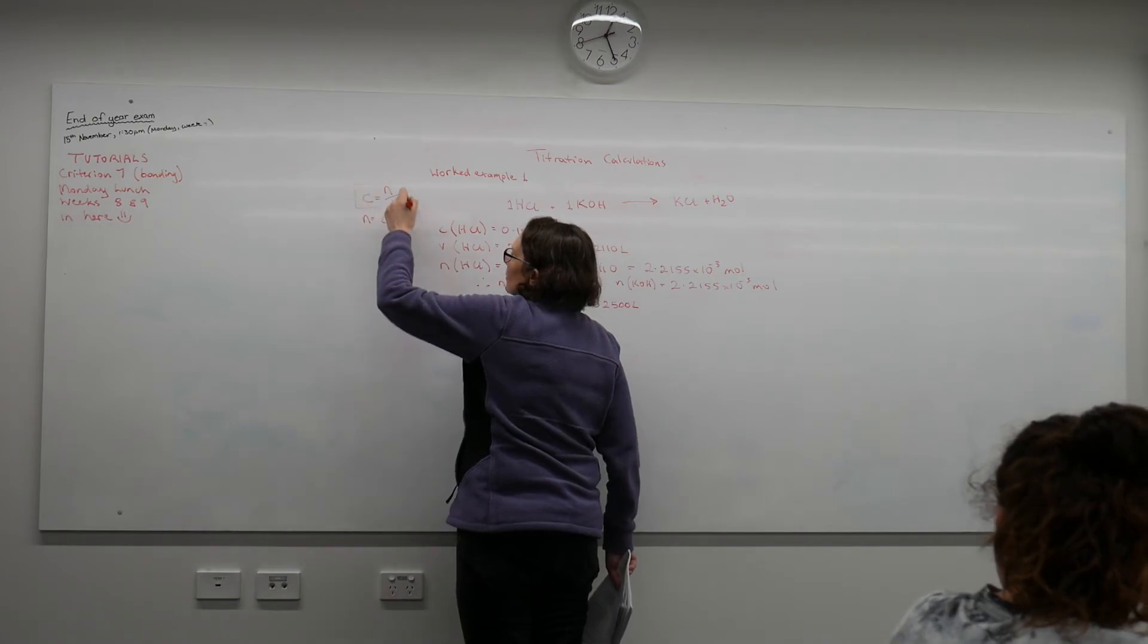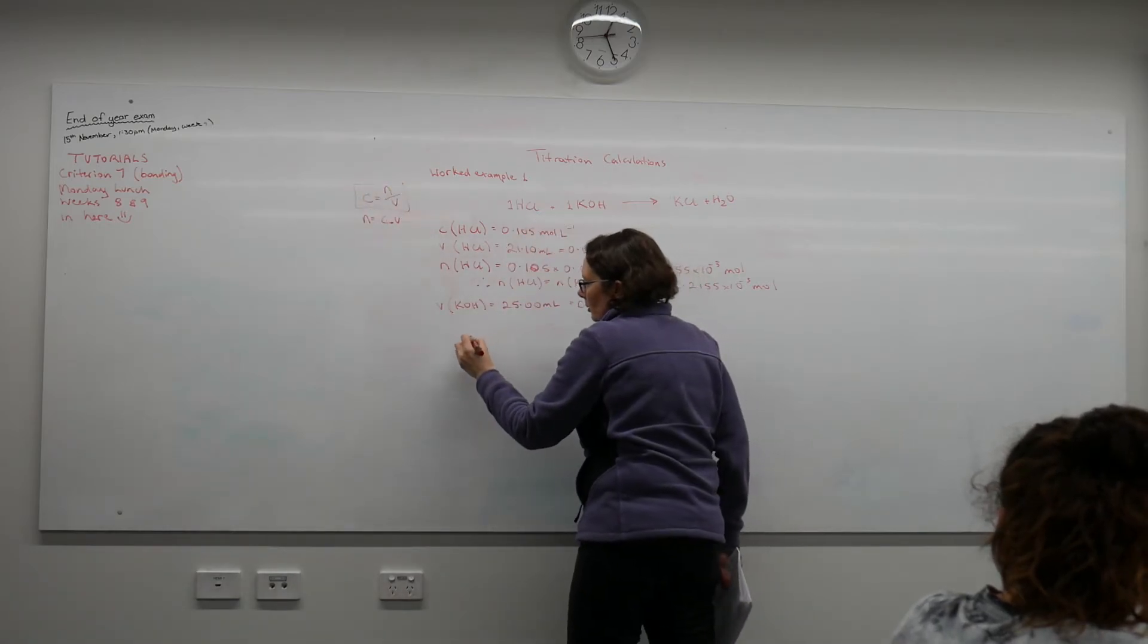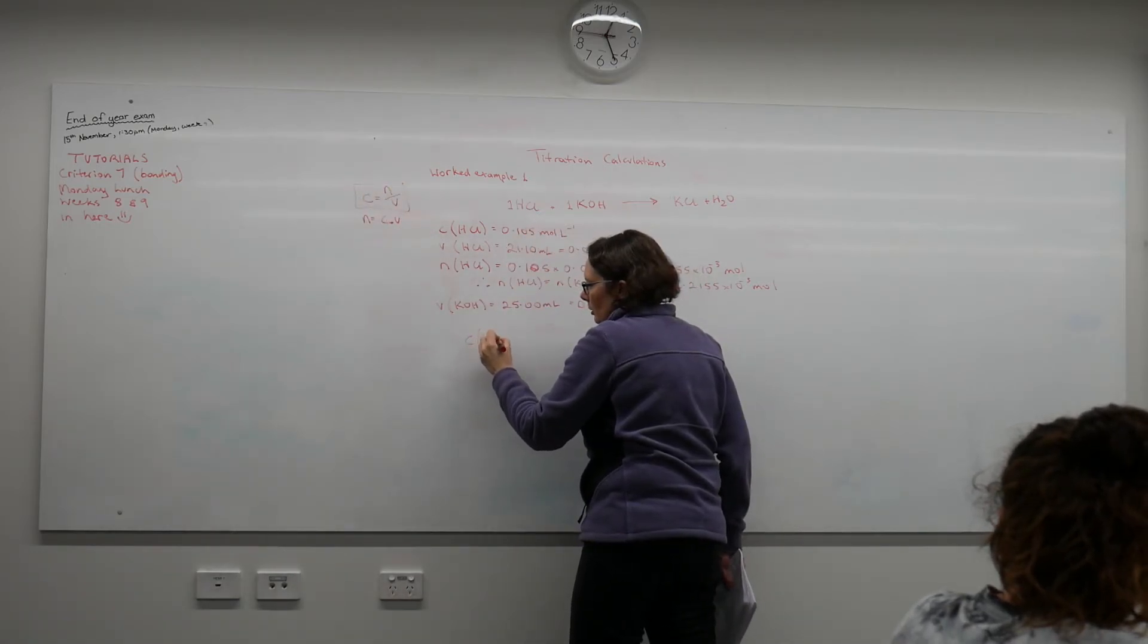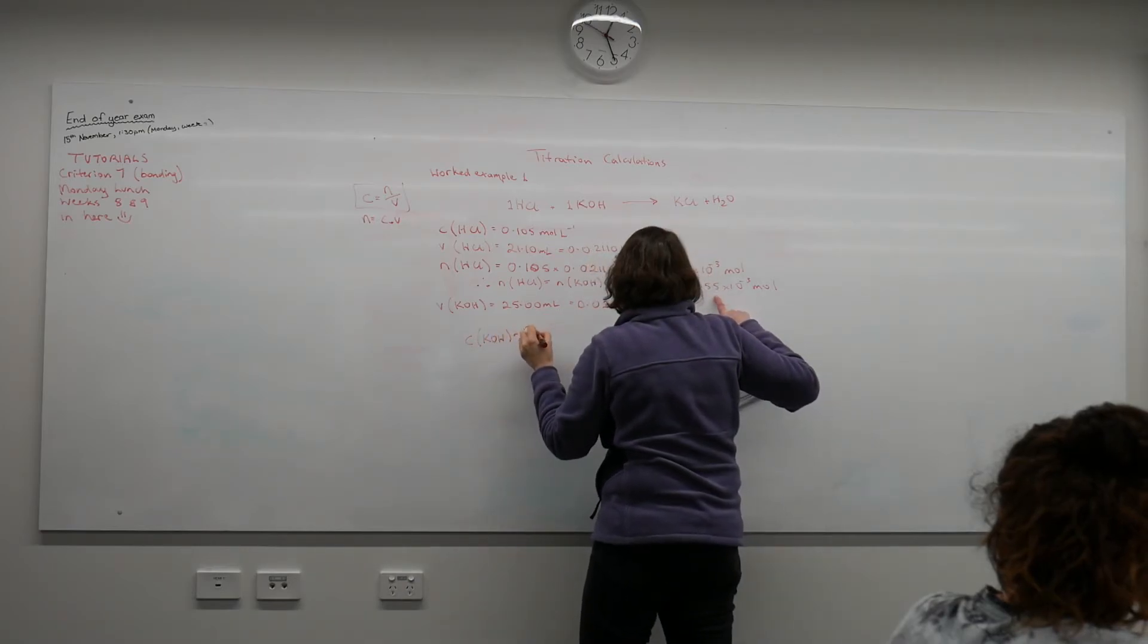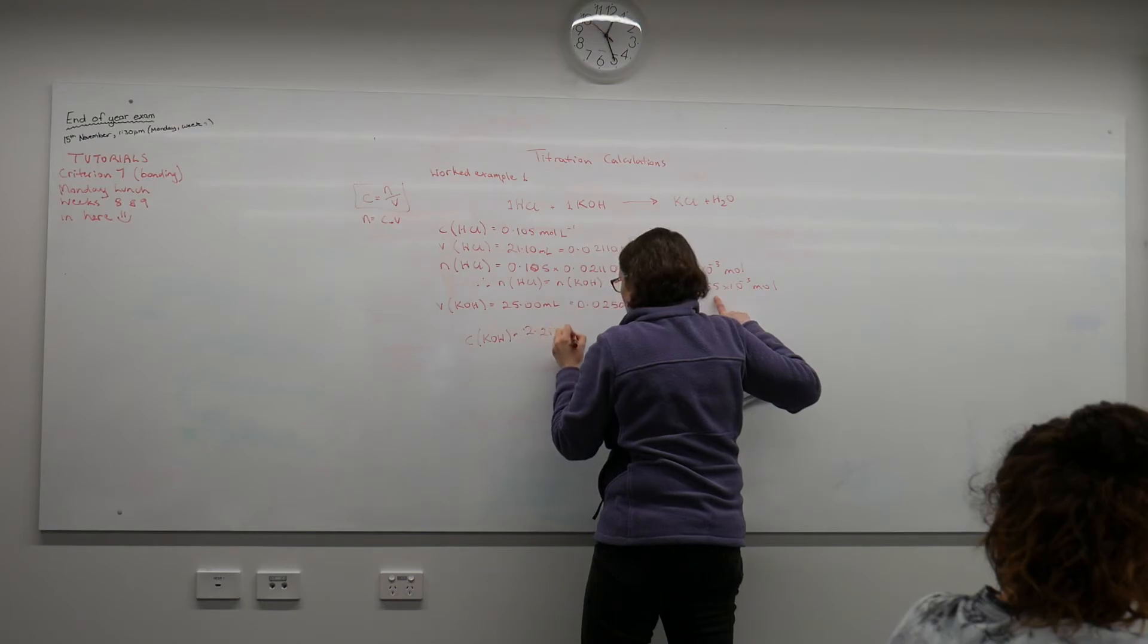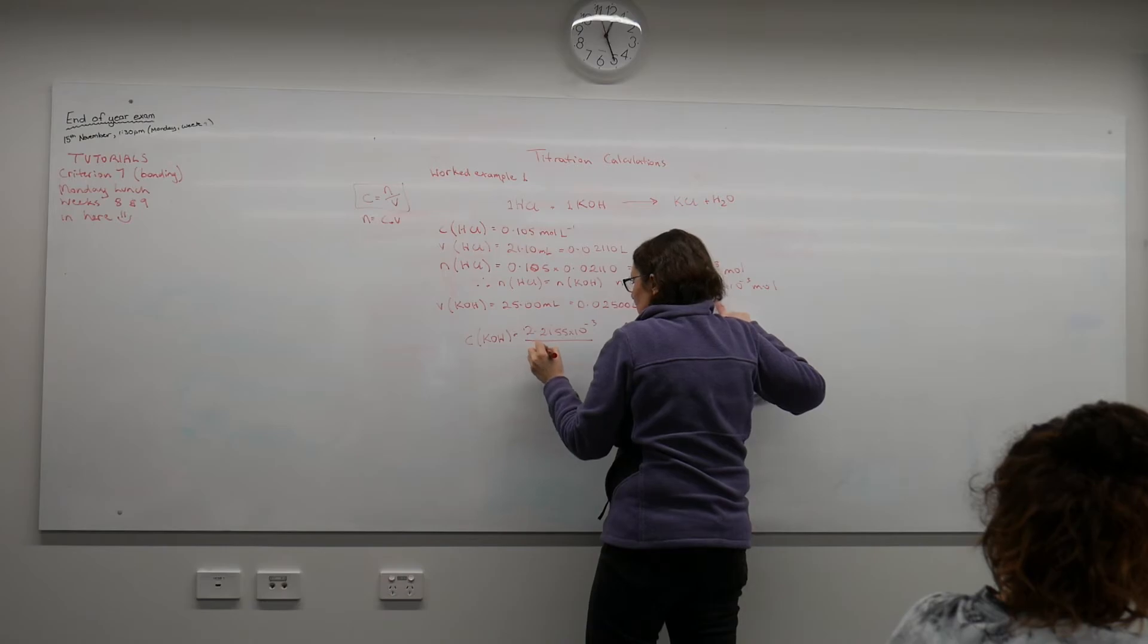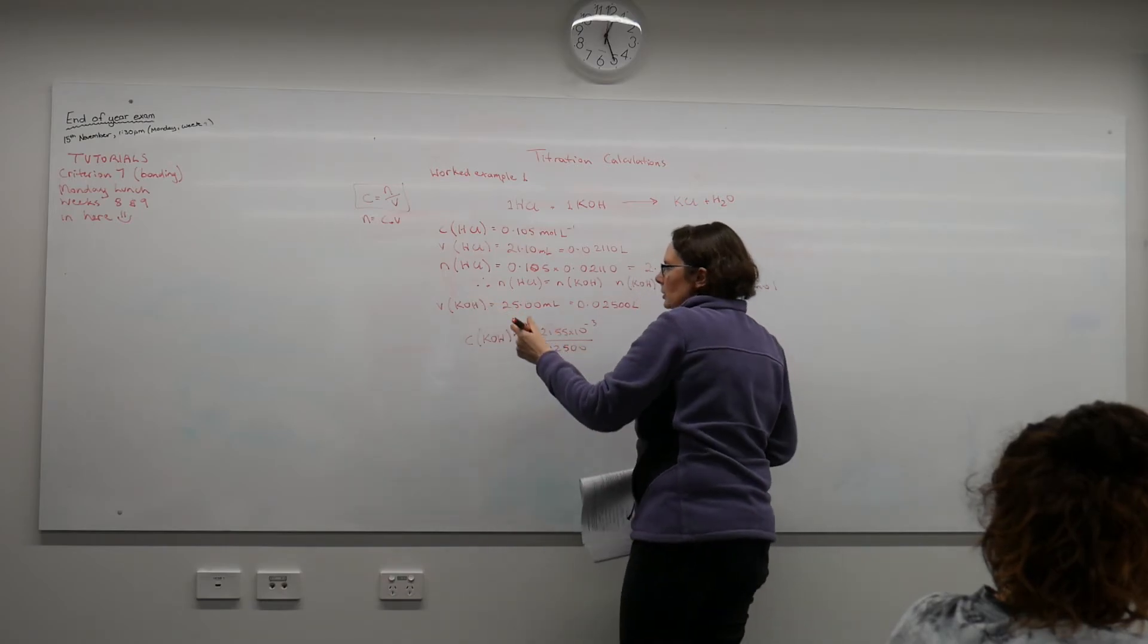Using this arrangement of my equation, the concentration of potassium hydroxide will now equal the moles, 2.2155 times 10 to the minus 3, divided by the volume in litres of potassium hydroxide.